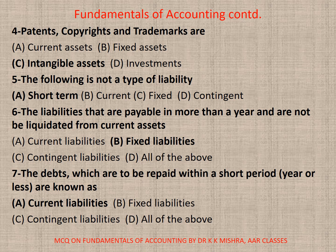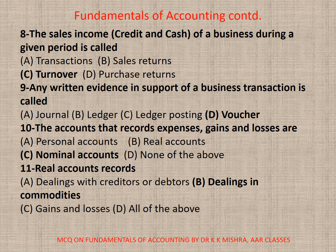Question 6: The liabilities that are payable in more than a year and are not liquidated from current assets — A. Current Liabilities, B. Fixed Liabilities, C. Contingent Liabilities, D. All of the above. The correct option is A. Current Liabilities. Question 8: The sales income — credit or cash — of a business during a given period is called A. Transactions, B. Sales Returns, C. Turnover, D. Purchase Returns. Correct option is C. Turnover.